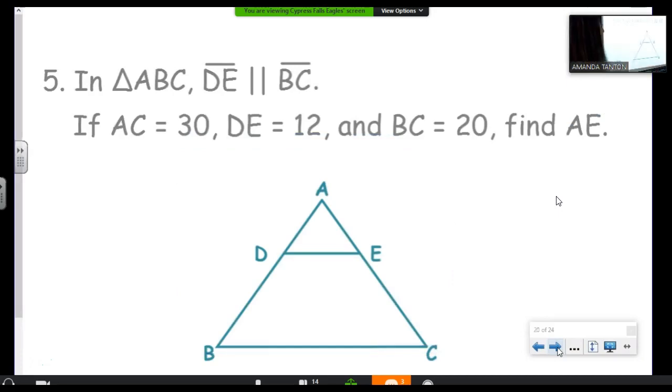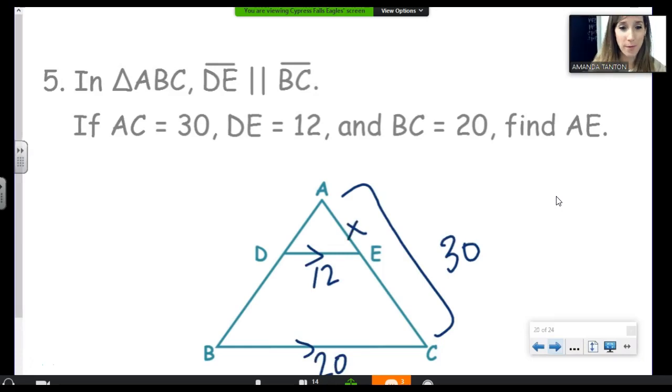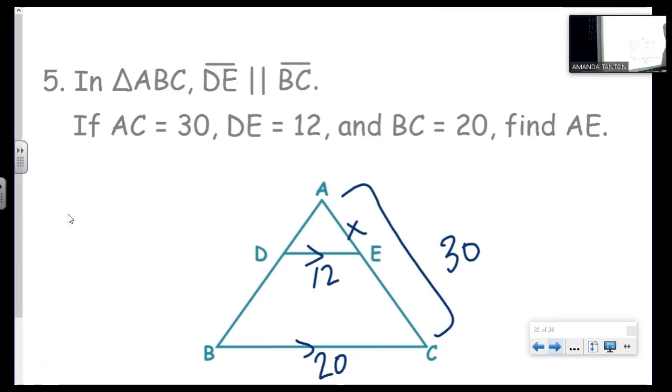All right. In ABC, DE is parallel to BC. AC is 30. DE is 12. And BC is 20. Find AE. Will we be using the TPT in problem 5? Will we be using the TPT? Evidence here. The triangle proportionality theorem says that if DE is parallel to BC, then circle is to star as circle is to star. But are those the parts we were given? It doesn't say anything about DE and BC. It says stuff about AD and DB. You get what I'm saying?